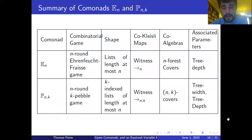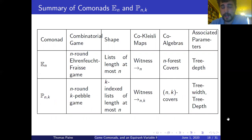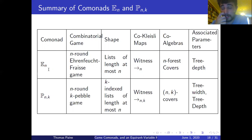Summarizing both comonads: what we are doing is taking concepts from finite model theory and tidying them up using categorical ideas. The entire picture — the n-morphism relation, forest covers, tree depth — condenses into the features of a single categorical construction: the comonad E_n. Similarly P_{n,k} captures the n-k-morphism relation, n-k-covers, and both tree depth and tree width, all in one.